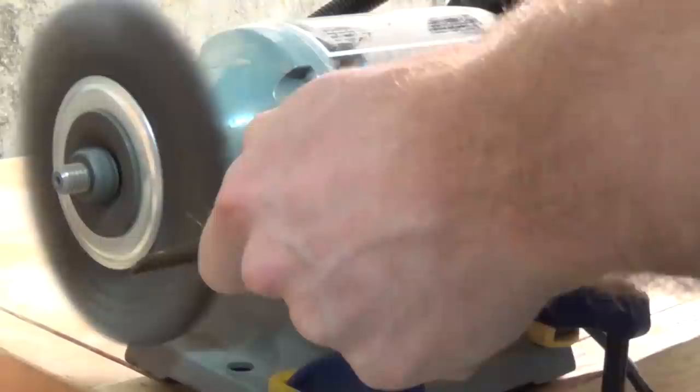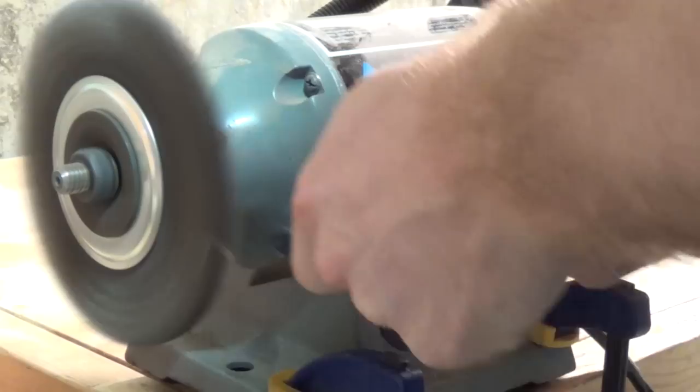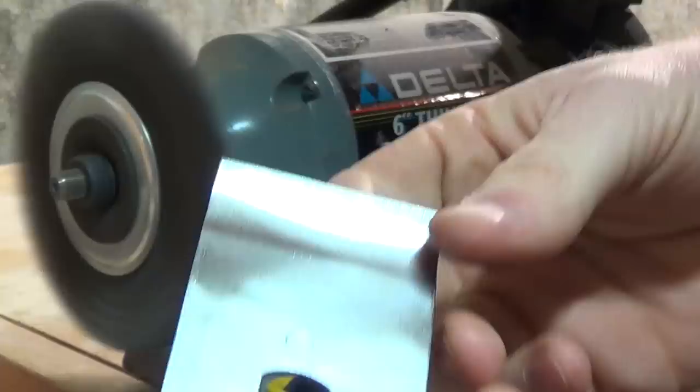After I had the plane disassembled, I took some of the metal parts to the wire wheel, and those actually cleaned up really well. I've got a pretty aggressive wheel on there, but it seemed to work really well.